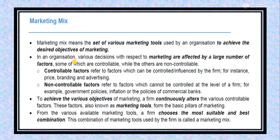In an organization, various decisions with respect to marketing are affected by a large number of factors, some of which are controllable while others are non-controllable. Controllable factors refer to factors which can be controlled or influenced by the firm — for instance, price, branding, and advertising. Non-controllable factors refer to factors which cannot be controlled at the level of the firm — for example, government policies, inflation, or the policies of commercial banks.